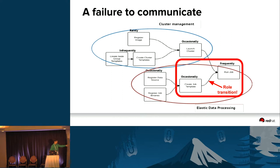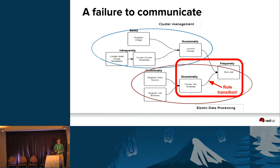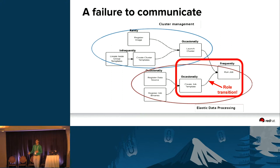Right here there's a role transition. The job developer is going to register binaries and create a job template. The cluster operator is going to configure the cluster, launch it, and probably run the job. Right there is a change between people, a change between skill sets. As developers of OpenStack who know the whole flow, it's easy for us to imagine that everybody has our knowledge and can map these things through effectively. Because of that role transition, that's really not true. If we wrote two different user stories for those two different people, we'd end up with a very different set of requirements and a very different implementation.